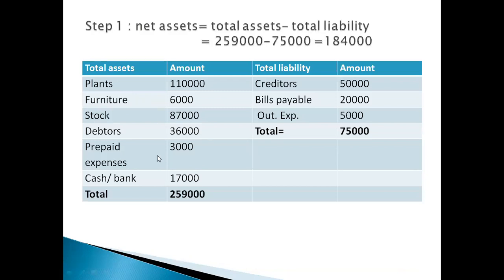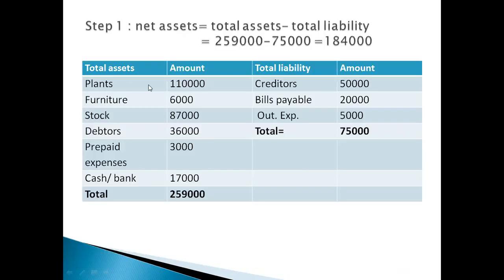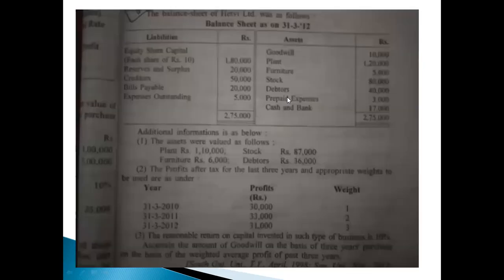The first step uses additional information. Plant 10,000, furniture 6,000, stock 87,000, and debtors 36,000 — these new values are considered. Assets included: the goodwill is an intangible asset to be excluded. The revised asset values are taken into account for net assets calculation.